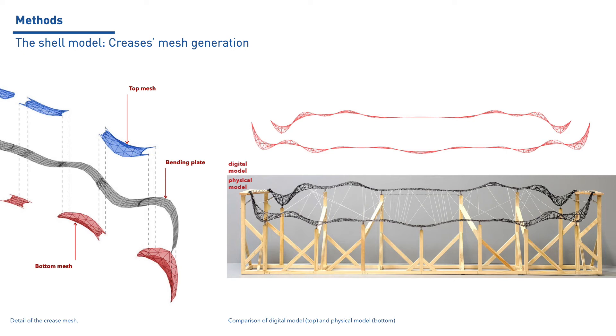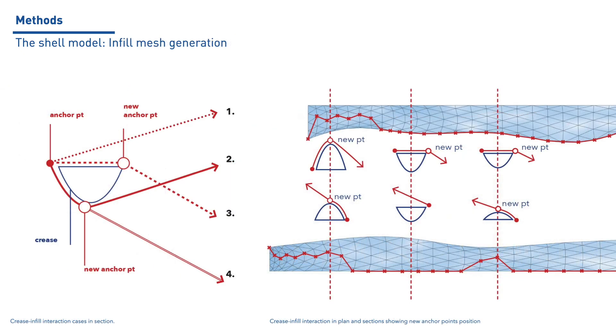Considering that the infill fibers are anchored to the external edges of the creases, the interaction between creases and infill will differ from each crease configuration. All the possible crease-infill interaction cases can be seen in the image on the left. An algorithm is therefore developed to evaluate which interaction case applies to each anchoring point and assign a new point if required as shown on the right. Once the new contact points are remapped, the infill mesh is created, the mesh resolution defined, and the relaxation adjusted through physical models to realistically represent the infill surface.